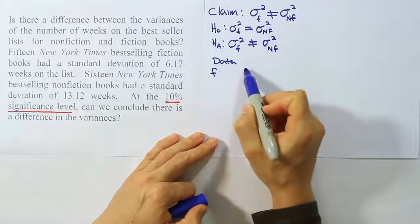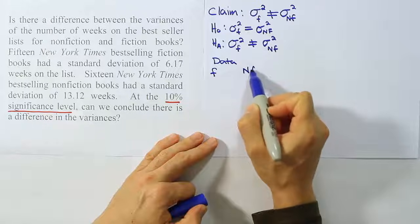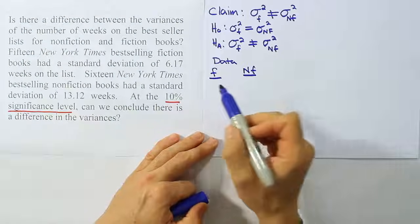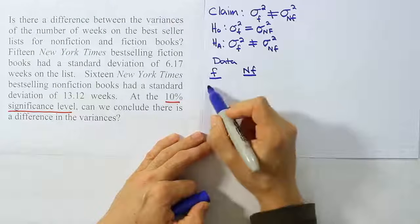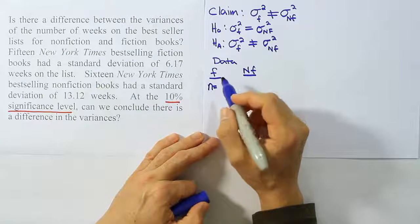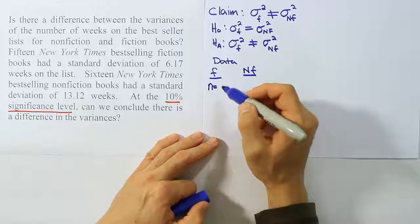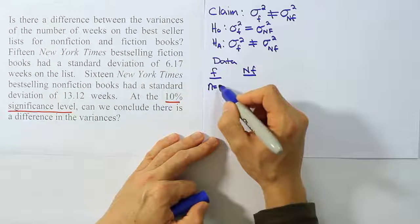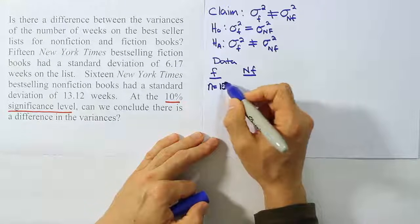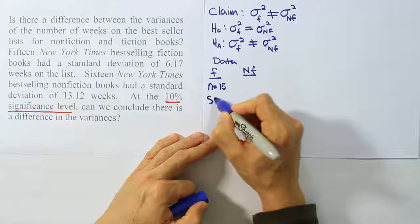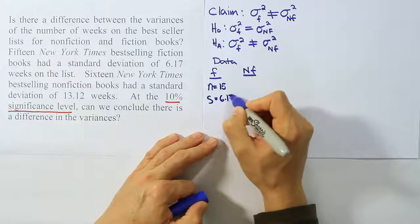Data for the fiction group, data for the non-fiction group. For the fiction group, they give us that there are 15 items drawn, 15 books that are looked at. So n is 15. And then they tell us the standard deviation, so that's our s for that group of 15 books, is 6.17.